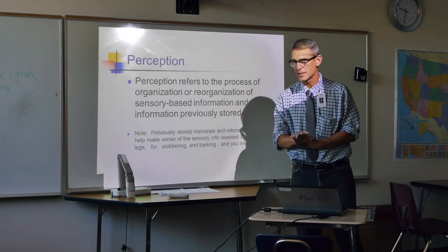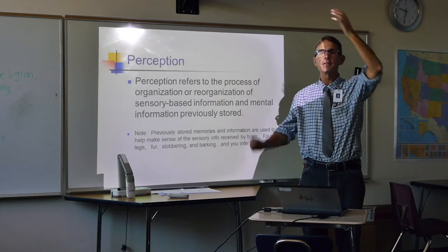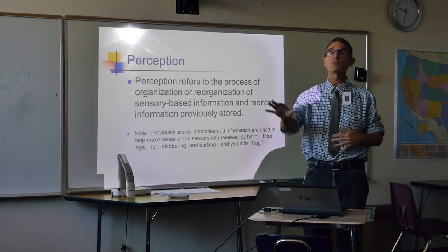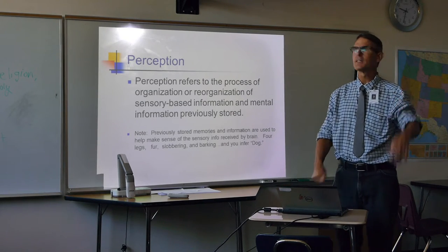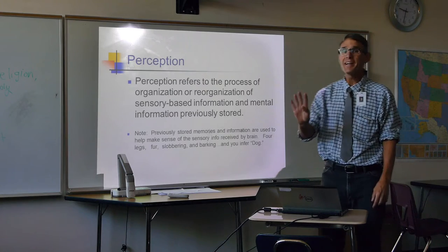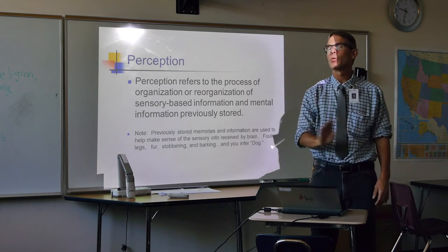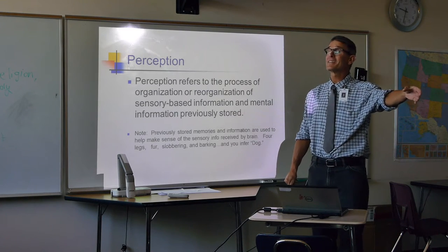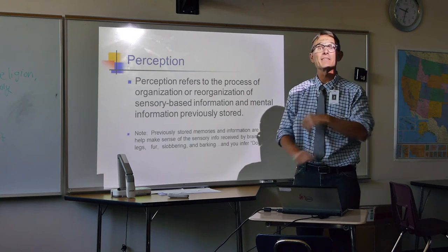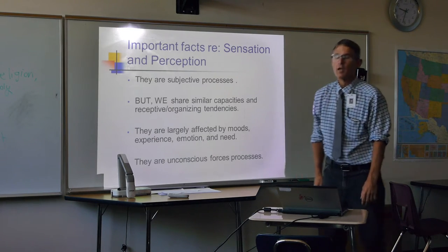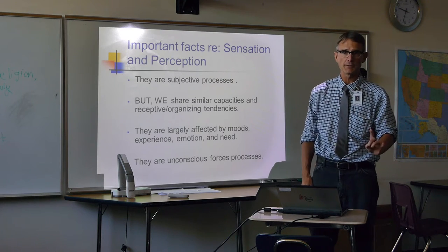The second process in the information processing system is perception. After we take in information through our senses, it has to be sent to parts of the brain for meaning-making. For instance, if we see something with fur on it, slobber coming from its face, and four legs, the back of our brain pulls up the word 'dog' and we recognize what is in our environment. Perception organizes incoming sensory information with previously stored information in our brains to make sense of everything around us.